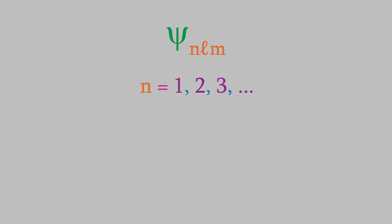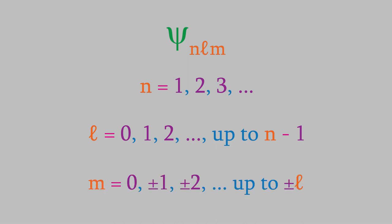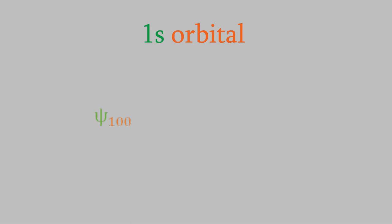Let's look at some of those wave functions. The value of n can be any positive integer, l can be any integer from 0 up to n-1, and m can be any integer between negative and positive l. So the wave function with the smallest values has n equal to 1, l equal to 0, and m equal to 0. You might remember that the orbital with these values is the 1s orbital, so this wave function is the one for the 1s orbital.